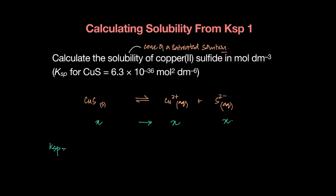And KSP of this expression would be copper 2+ into sulfide 2-. And copper 2+ is X and sulfide is also X. So what do we get? We get X².